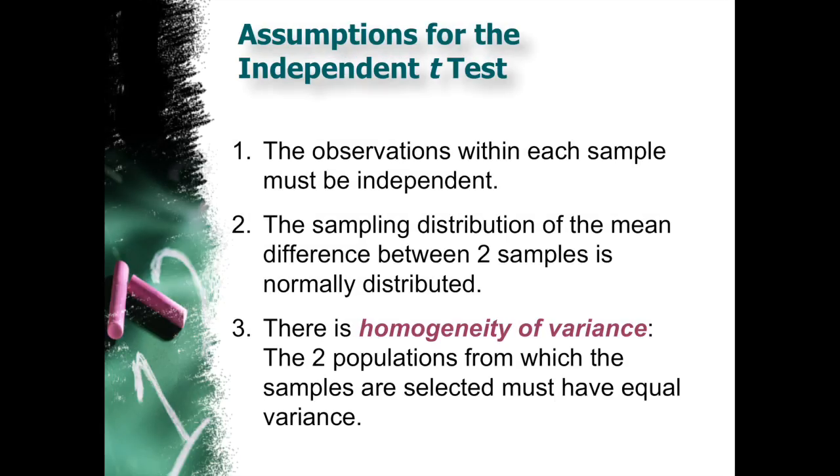Some of the assumptions of independent T. Again, the observations within each sample must be independent. There's no double dipping there. Number two, the sampling distribution of the mean difference between two samples is assumed to be normally distributed, or pretty close to being normally distributed. And then three, that it meets the homogeneity of variance, or the two populations from which the samples are selected must have equal-ish, or equal enough variance. And I have a whole video dedicated to how to decide if this third assumption is being violated, or you did meet that homogeneity of variance assumption.